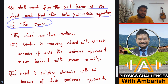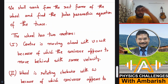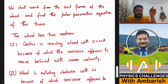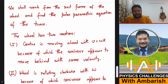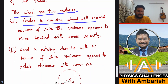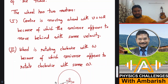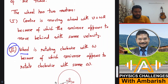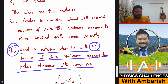We shall work from the rest frame of the wheel and find the polar parametric equation of the trace. A polar equation has two aspects: the angle and the distance. I will find the distance of the pencil from the center as a function of time, and also the angular position of the pencil with respect to the center of the wheel as a function of time. The wheel has two motions: the center moves forward with velocity v = ωR, because of which the entire universe appears to move backward with speed ωR, and the wheel also rotates clockwise with ω.